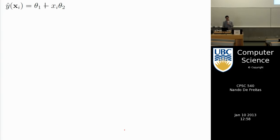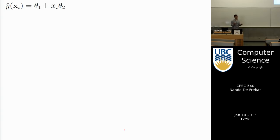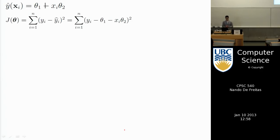In 2D, a linear model is essentially a line. It has a slope θ_2, one input x, one output y, and an intercept θ_1. How do we find the best θ_1 and θ_2 given data? We minimize an objective function J.